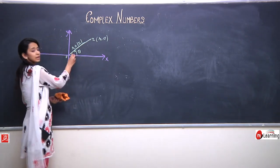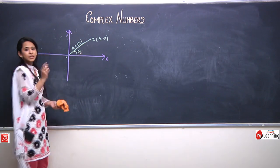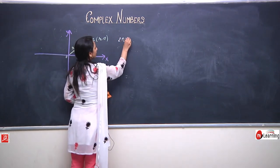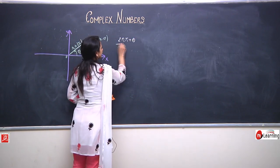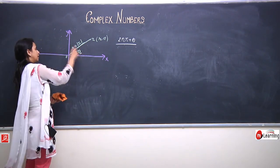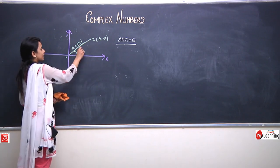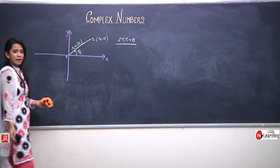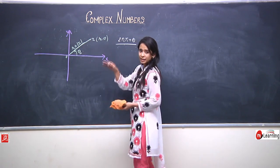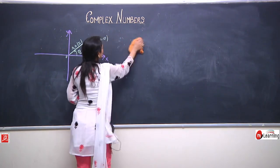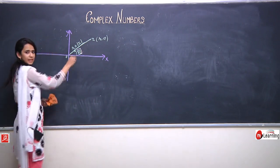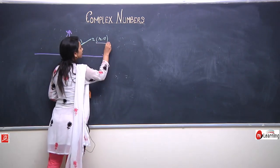This angle theta does not possess a unique value. It can possess multiple values in the form of 2nπ plus theta. For example, if theta is 45 degrees or pi by 4, then it can take multiple values such as 360 plus 45, 720 plus 45, and so on. So let us try to define a rule by which we can find a standard value of theta to represent in polar coordinates.